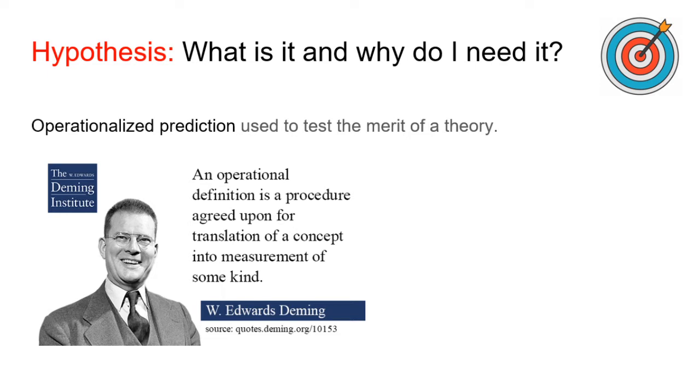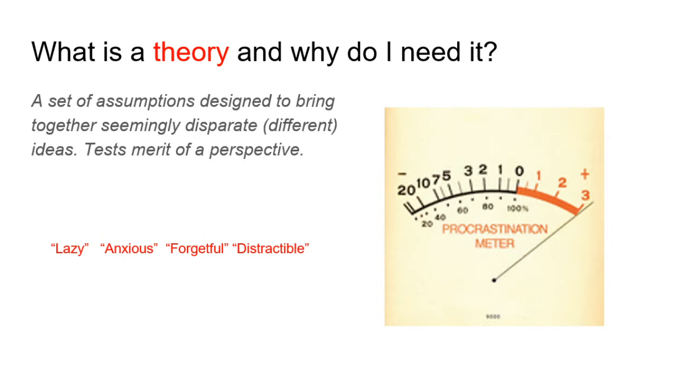Take procrastination for instance. People procrastinate in all sorts of areas of their life. They procrastinate in paying their bills. They procrastinate in going to the gym or otherwise exercising. They procrastinate in visiting their elderly loved ones at the nursing home. They procrastinate at buying Christmas gifts. They procrastinate at making a savings for retirement. They procrastinate at getting school work done. They procrastinate at getting work on their job done, etc. A good theory is one that makes sense of all of these different observations about procrastination. And again, in this example, it could be based upon the theory of laziness, anxiety, forgetfulness, distractibility, or some other theory.